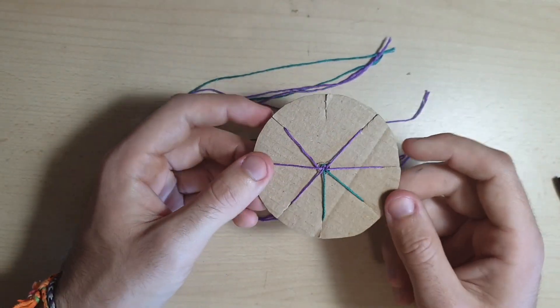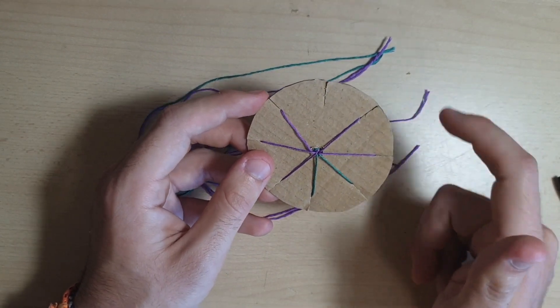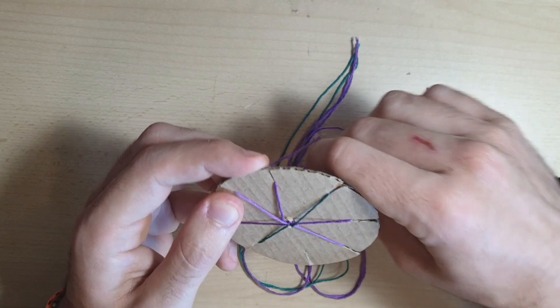Then you rotate it again, so you've got the empty slot facing away from you at the top, and you count one, two, three. Take it out and put it to the top.